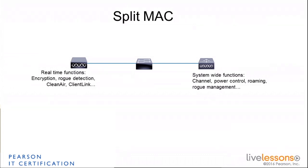This is where we're going to do global view for channel control, power control. This is also where you'll do client authentication, policy validation, QoS validation, etc. This Split MAC is very interesting because it frees the access points from things that will be taking too many resources from the AP and allows the AP to focus on what has to be real-time. At the same time, it gives you a central point from where you can view and control all the access points, but also all the clients in your network. So that's a very powerful split.